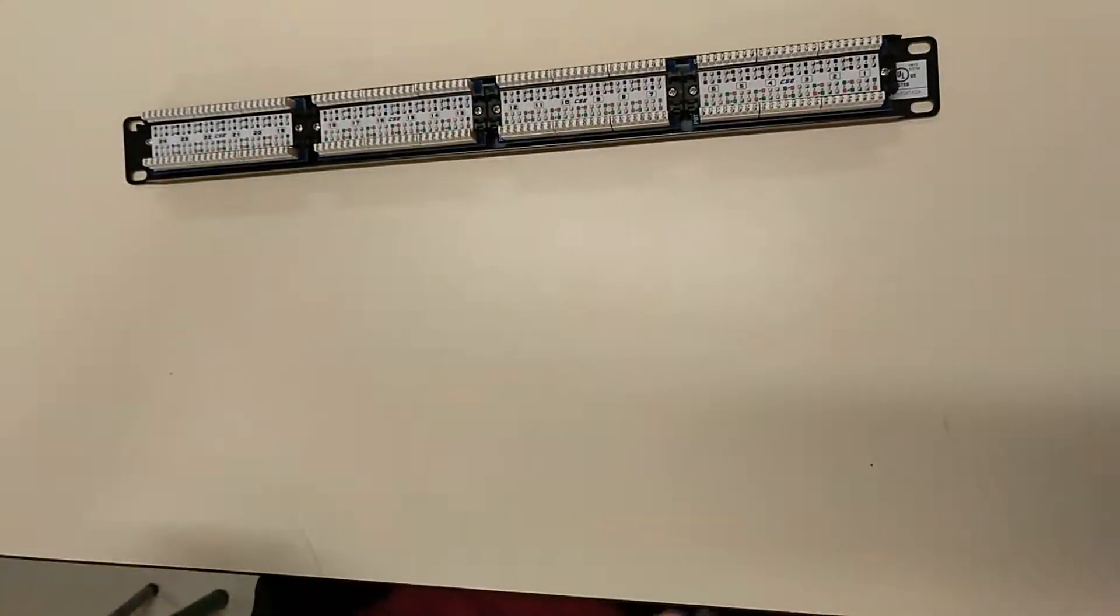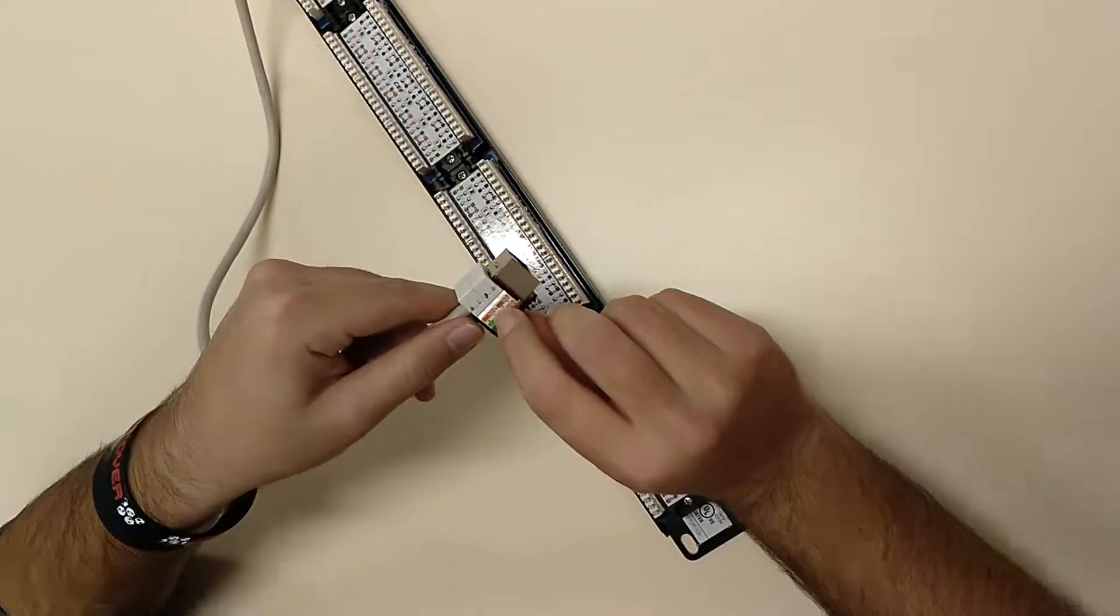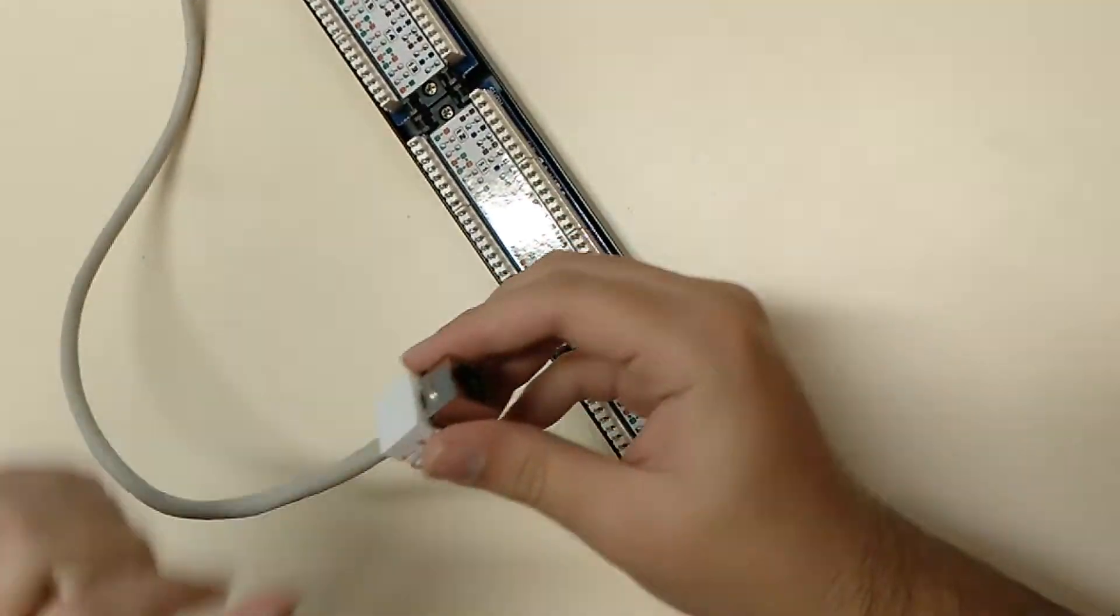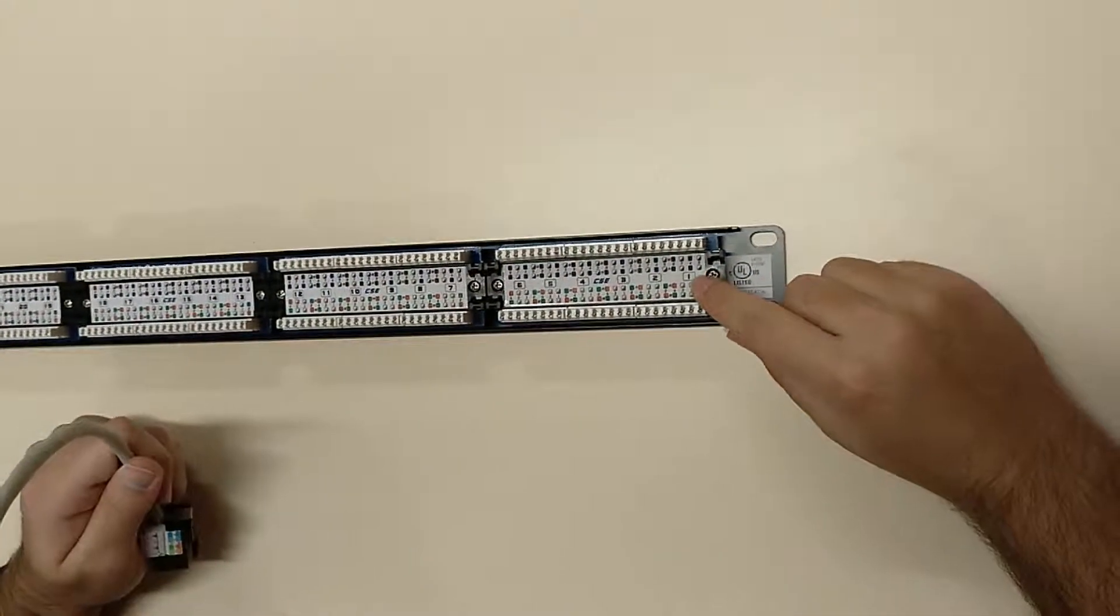Once untwisted, in the patch panel we will use the combination of colors indicated on it. There are two types, A and B. We will use the A because in the wall circuit we have made that combination. As you can see, here are the colors indicated that we must use on each side.